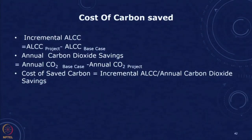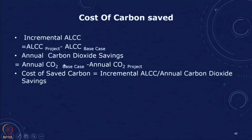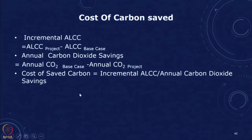We have already discussed the cost of saved carbon. When we look at a renewable option, we take the incremental annualized life cycle cost — that is, the annualized life cycle cost of the project minus the annualized life cycle cost of the base case. We also calculate the annual CO₂ savings, which is the CO₂ in the base case minus that in the project. The incremental annualized life cycle cost divided by the annual CO₂ savings gives the cost of saved carbon.